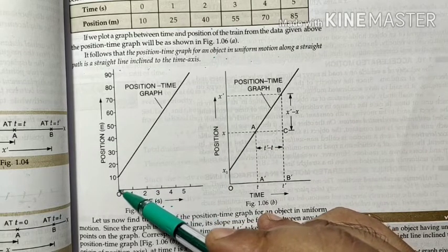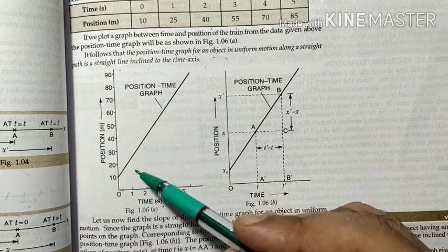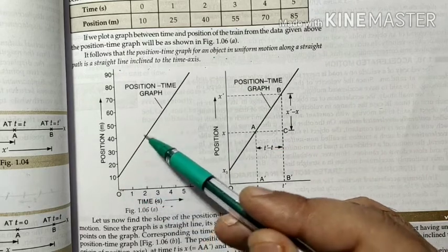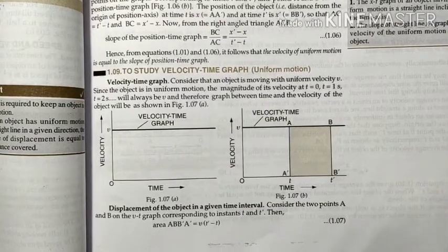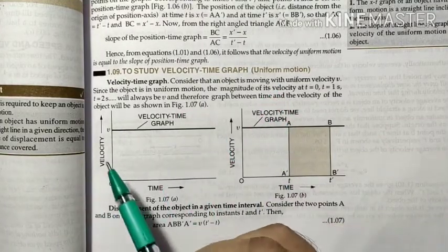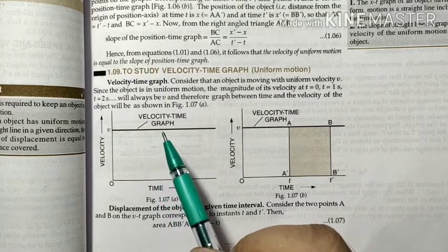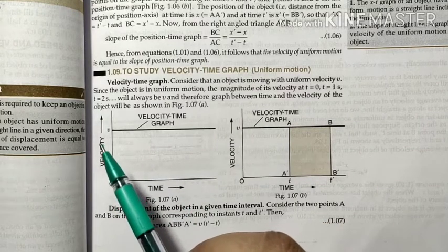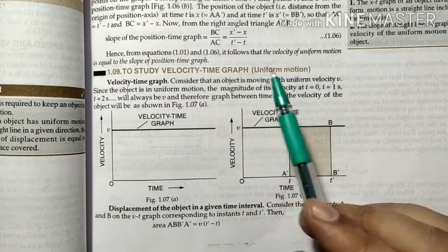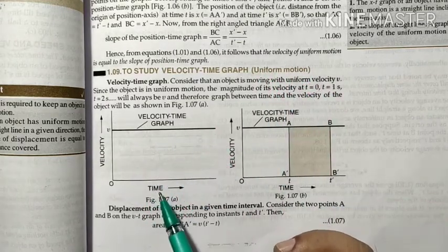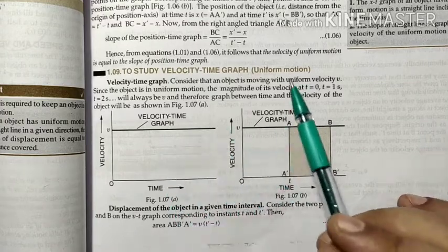If the object starts from zero position, the graph starts from the origin and goes straight up. In the velocity-time graph, velocity is on the y-axis and time on the x-axis. For uniform motion, velocity does not change with respect to time — the graph is a horizontal straight line. When velocity changes with time, the motion becomes non-uniform.